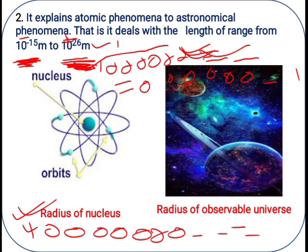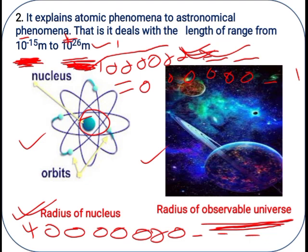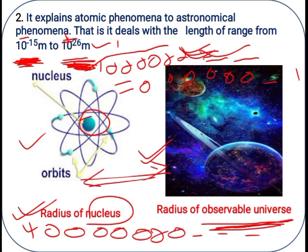For example, comparing the radius of a nucleus — which is very small, so expressed with a negative exponent — to the radius of the observable universe, which is much larger, expressed with a positive exponent. The smaller value uses a negative power and the larger value uses a positive power of 10.